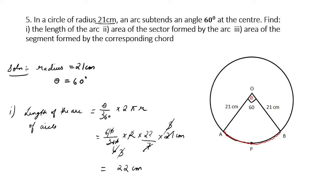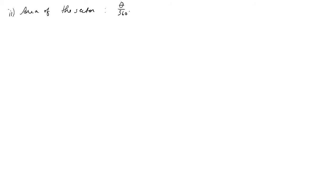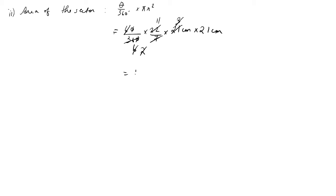Next, we have to find the area of the sector. The formula is (θ/360°) × πr². Substituting: (60/360) × (22/7) × 21 × 21. Cancelling 7 and 3: left with 11 × 21 = 231 cm². So 231 cm² is the area of the sector.